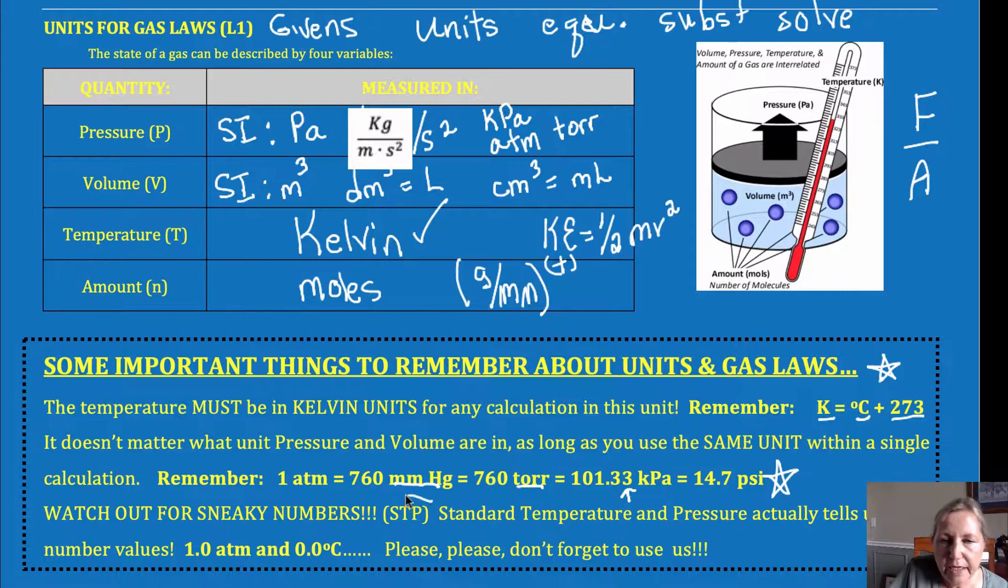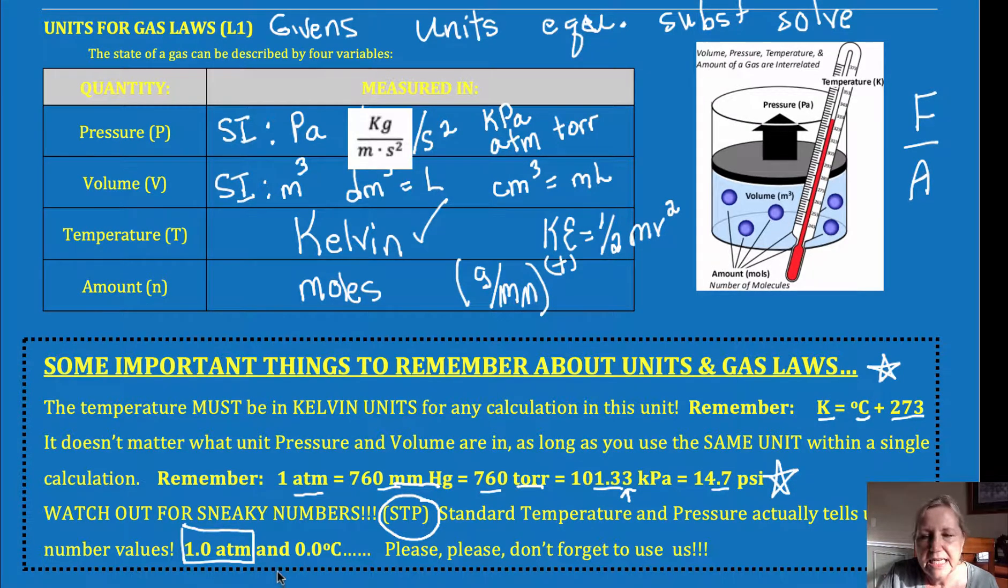And what is quite common to see is something called standard temperature and pressure. Most schools, most colleges and high schools are using an older standard pressure, and we will stick to that. It's one atmosphere. So every single one in this line, those are all standard pressures. You probably won't use PSI much, but it links it to your tires, for example. All of those can be used as a standard pressure. It's one atmosphere that has changed recently, but until you get into IB, you won't use anything other than that. And then 0 degrees Celsius.